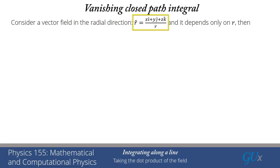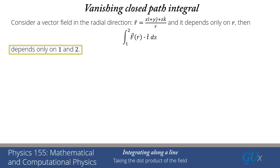Let's consider a vector field pointing in the radial direction. The unit vector in the radial direction can be written as x times i-hat plus y times j-hat plus z times k-hat, all divided by r. Assume that the vector field depends only on r — the square root of x² plus y² plus z². Then the integral from point 1 to point 2 of F(r) dot t-hat ds depends only on the endpoints 1 and 2, not on the shape of the curve between them. That's a remarkable result.